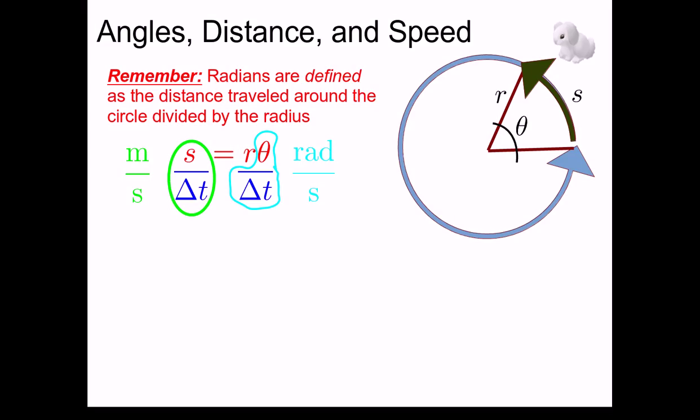So if we take s over delta t and we write it as v, the r is kind of along for the ride, and the theta over delta t as omega, we're left with v equals r omega. This is great, but what do these letters represent? Well, s over delta t is the speed of the bunny. It went a distance s in a time delta t. So this is the linear speed of the dust bunny on the DVD.